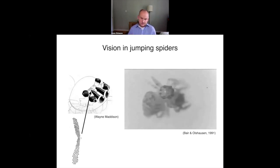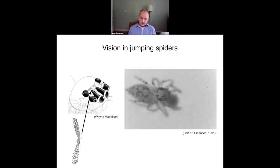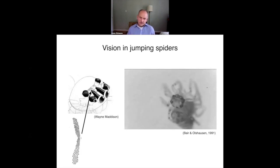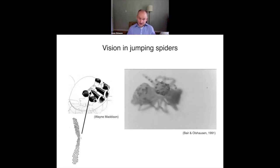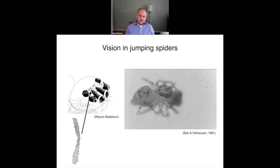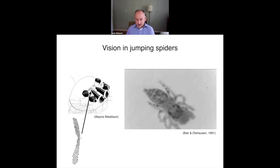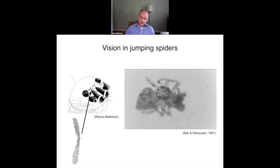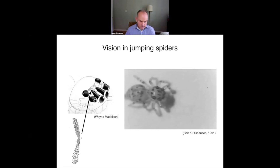They have tunnel vision from the front eyes, but the other eyes on the sides of their head give a full 360-degree field of view — low resolution but able to detect where things are. Typically they use those low-resolution eyes to find something interesting moving, then orient their head to image it with the high-resolution eyes. Beyond detecting prey, they also use the high-resolution eyes to recognize conspecifics and perform elaborate mating courtship dances.